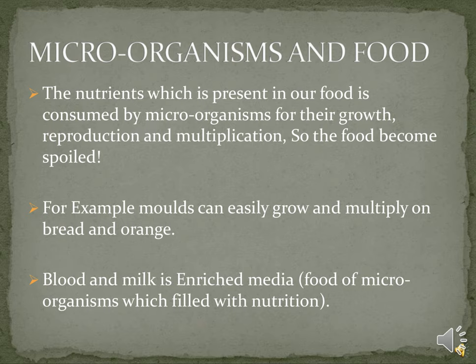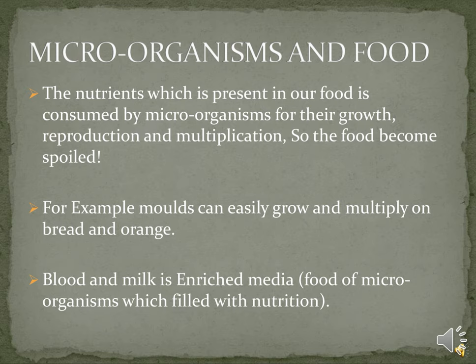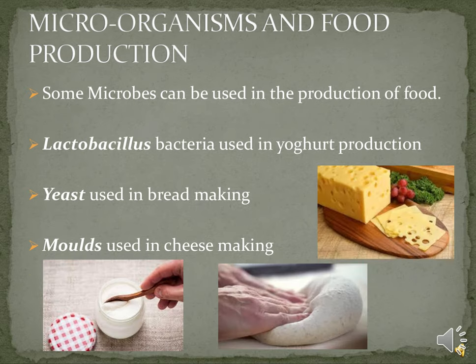Microorganisms and food: as we all know, microorganisms are those living things which cannot be seen with the naked eye — we need a microscope to see them. The nutrients present in our food are consumed by microorganisms for their growth, reproduction, and multiplication, so the food becomes spoiled. For example, molds can easily grow and multiply on bread and orange. Blood and milk are enriched media, meaning they are full of nutrition for some microorganisms.